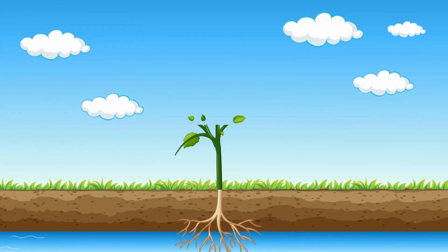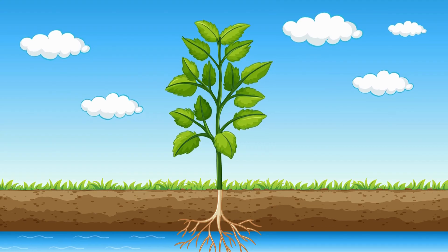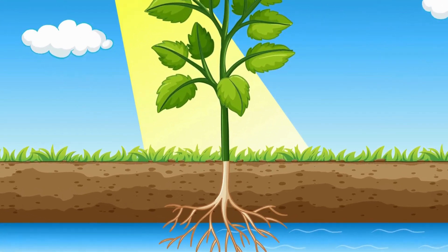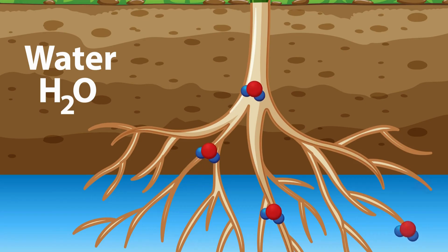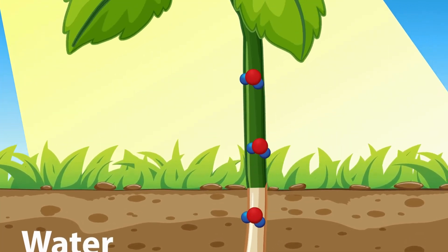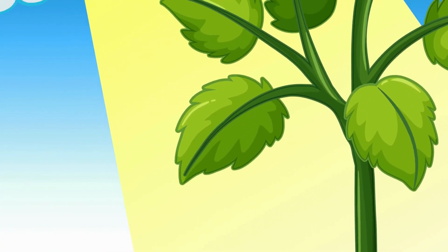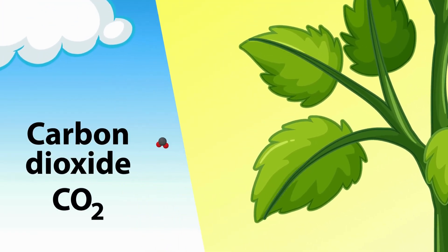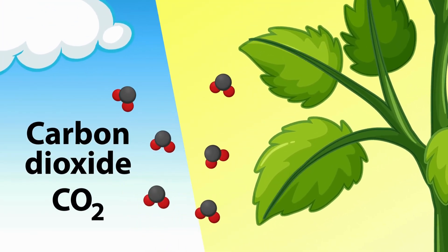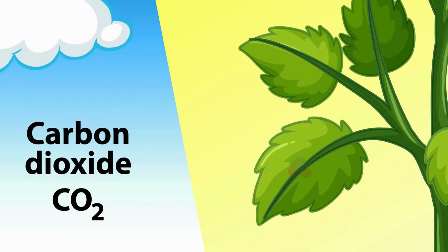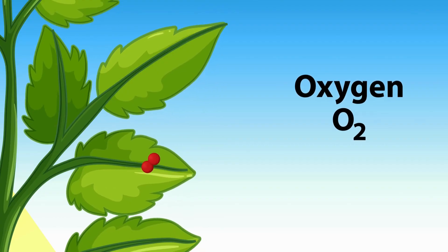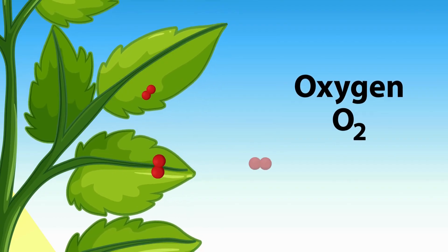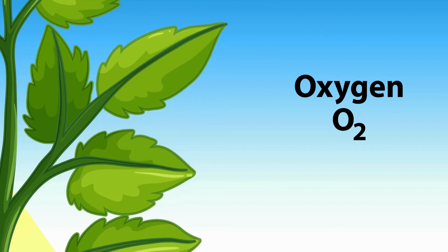Photosynthesis occurs in two main stages: the light-dependent reactions and the light-independent reactions, also known as the Calvin cycle. In the light-dependent reactions, light energy is captured by chlorophyll and used to produce ATP and NADPH, which are energy carriers. This stage takes place in the thylakoid membranes of the chloroplasts. The ATP and NADPH produced are then used in the Calvin cycle, which occurs in the stroma of the chloroplasts.